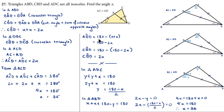For the second method: if the base angles of triangle ABD are both X, then angle ABD equals 180 minus 2X. Since CBA is a straight line, angle CBD equals 180 minus angle ABD, which is 180 minus (180 minus 2X), giving CBD equals 2X. This gives the same result without using the exterior angle theorem.